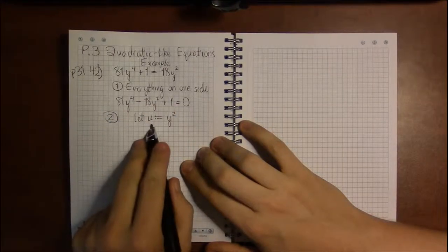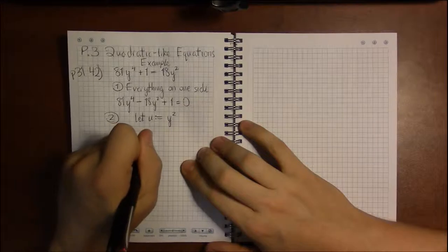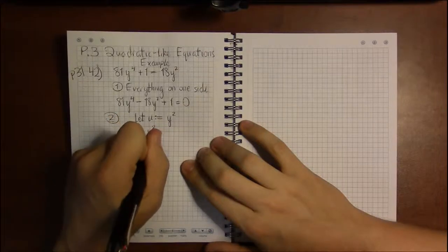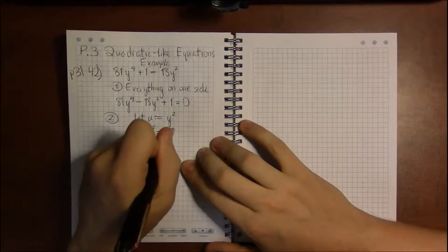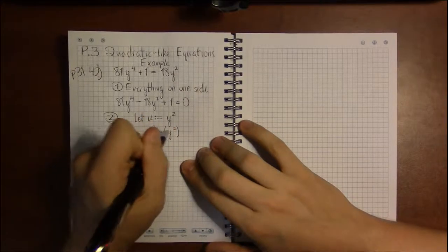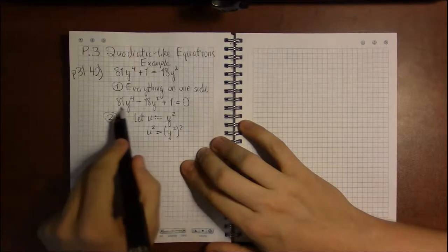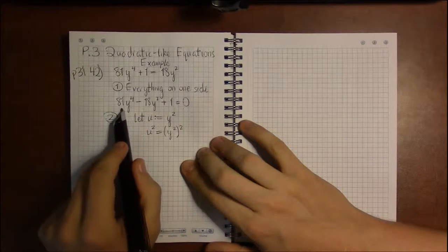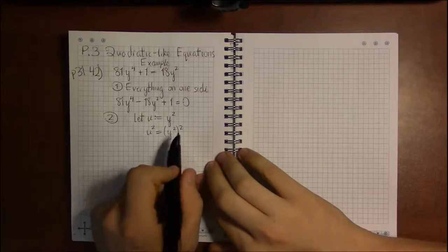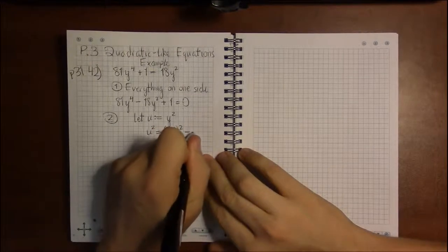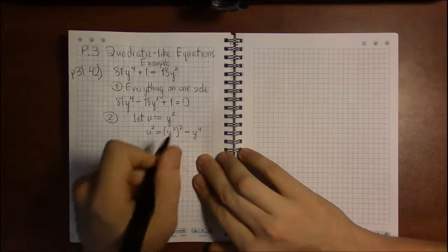And we can double check that that works by looking at what u squared would be. If everything works out, we should be able to replace everything, all the y's in this equation, with u's. Y squared squared, we end up multiplying the exponents. So this is y to the fourth.